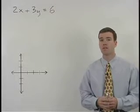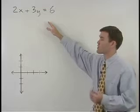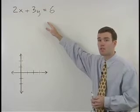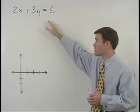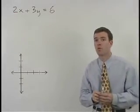To graph the line that has the equation 2x plus 3y equals 6, we would first convert the equation to slope intercept form.